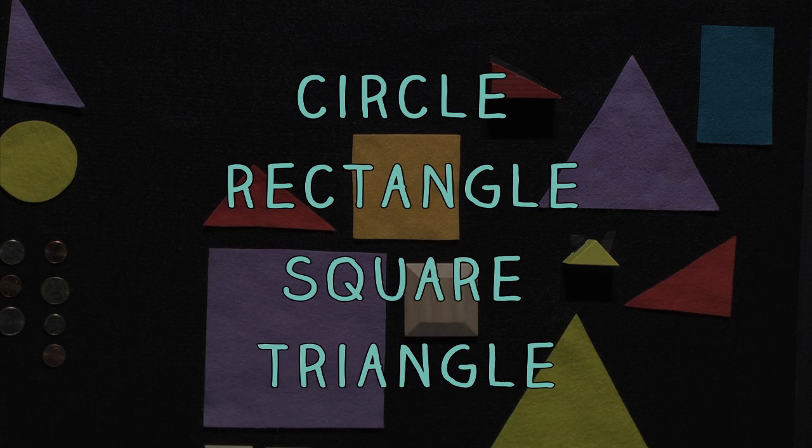By the end of preschool, your child will know four shapes: circles, rectangles, squares, and triangles.